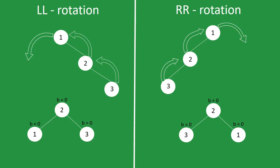These are the simpler rotations, which take place when the balance of the top node and its child node are both negative or both positive. But when these balances have different signs, double rotations take place.